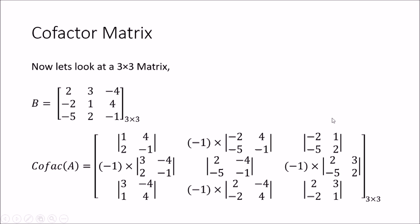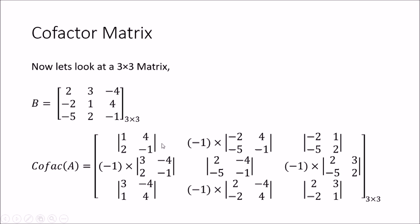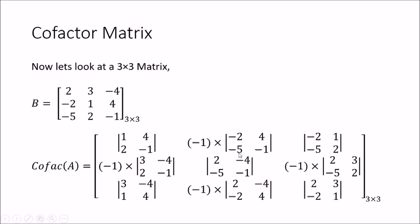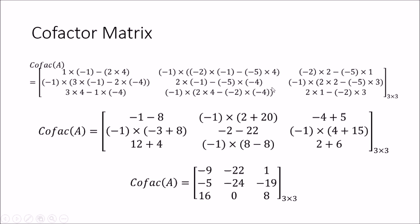Now we find the actual cofactor matrix by simplifying. For the 1,1 element the determinant is 1 into 1 minus 2 into 4. For the 1,2 element you apply the minus sign and compute -2 into -1 minus -5 into 4. Likewise you find the determinant for all six values and simplify: 1 into 1 is -1 minus 8; the second gives plus 20; and so on. After simplification you obtain the full 3 by 3 cofactor matrix.